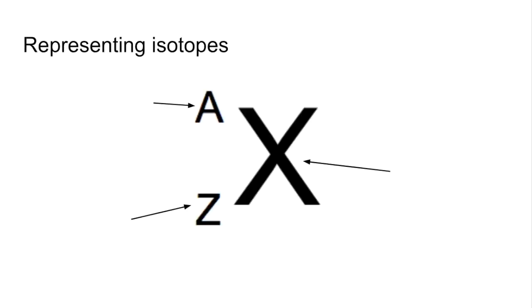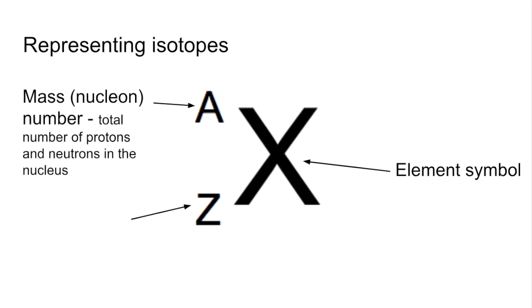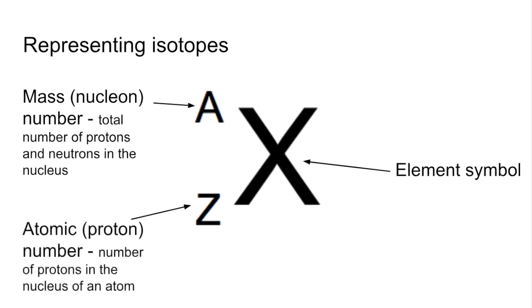So how do we represent isotopes? The X here is the element symbol. The A is the mass number or the nucleon number and that tells us the total number of protons and neutrons in the nucleus. The Z is the atomic number or the proton number and that tells us the number of protons in the nucleus of the atom.